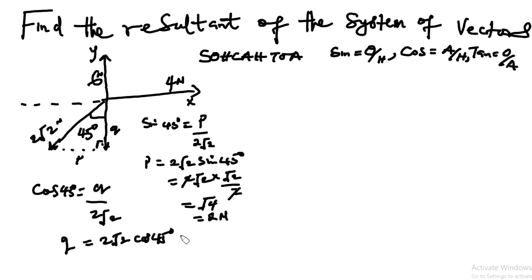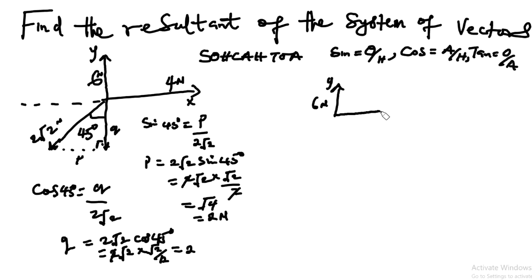Q = 2√2 × cos 45°. Notice that cos 45° is the same as sine 45°, which is √2/2. So Q = 2√2 × (√2/2) = 2. We have now resolved this vector both vertically and horizontally. Our diagram now shows: 6 Newton on the positive y-axis, 4 Newton on the positive x-axis, and our resolved components of 2 Newton vertically and 2 Newton horizontally.